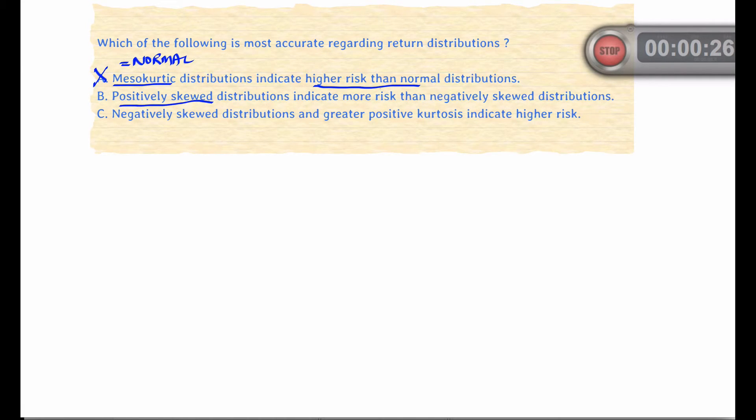Positively skewed return distributions imply that there are a greater number of returns in the right tail, meaning there is less risk of negative outcomes. So B is incorrect as well. C is the correct answer because negatively skewed distributions and distributions with greater positive kurtosis, or leptokurtic distributions, indicate higher risk.